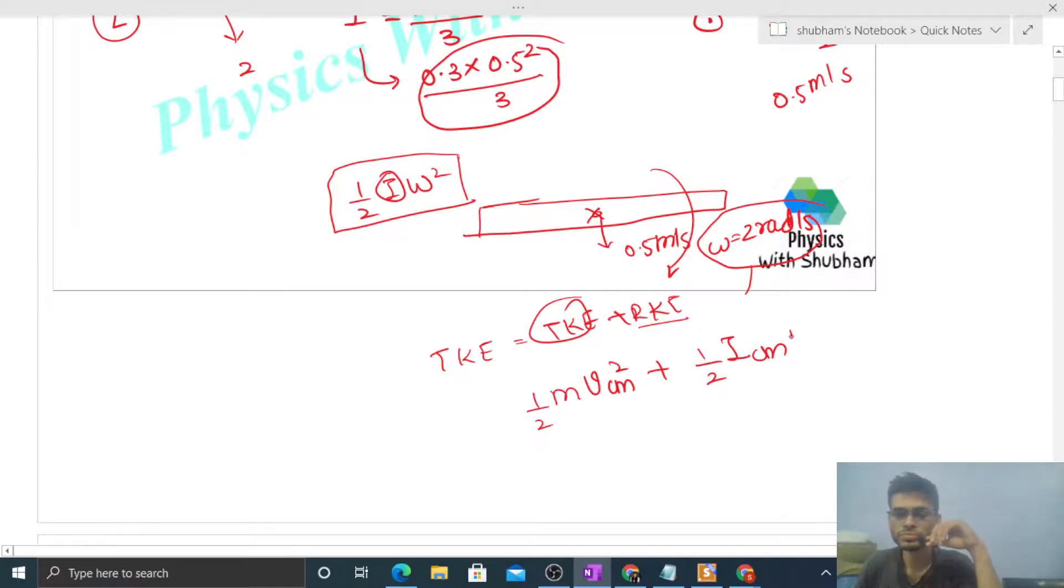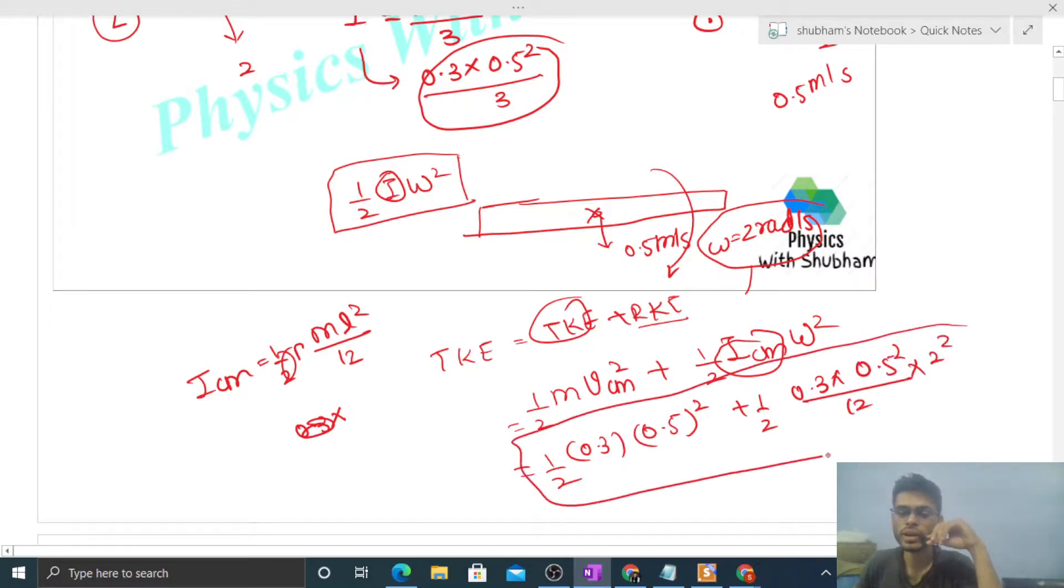Let me put the values: half, mass value 0.3, into velocity of center of mass 0.5 squared, plus half I about center of mass, that is mL²/12. Mass is 0.3, L squared by 12, into omega 2 squared.